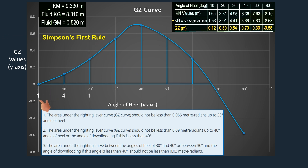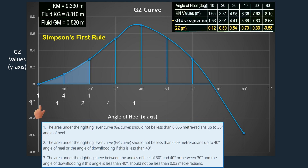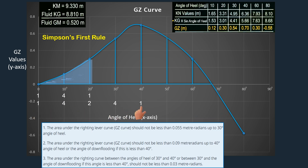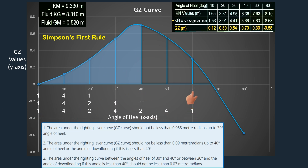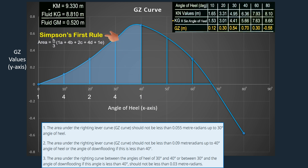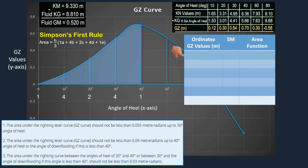Using Simpson's multipliers 1, 4, 1, the area under the GZ curve can be calculated up to 20 degrees of heel. Extending the multipliers to 1, 4, 2, 4, 1 allows for calculations up to 40 degrees, while 1, 4, 2, 4, 2, 4, 1 covers up to 60 degrees angle of heel. It is evident that for criteria number 1 we cannot calculate the area using Simpson's first rule. Instead, we will use a tabular approach.